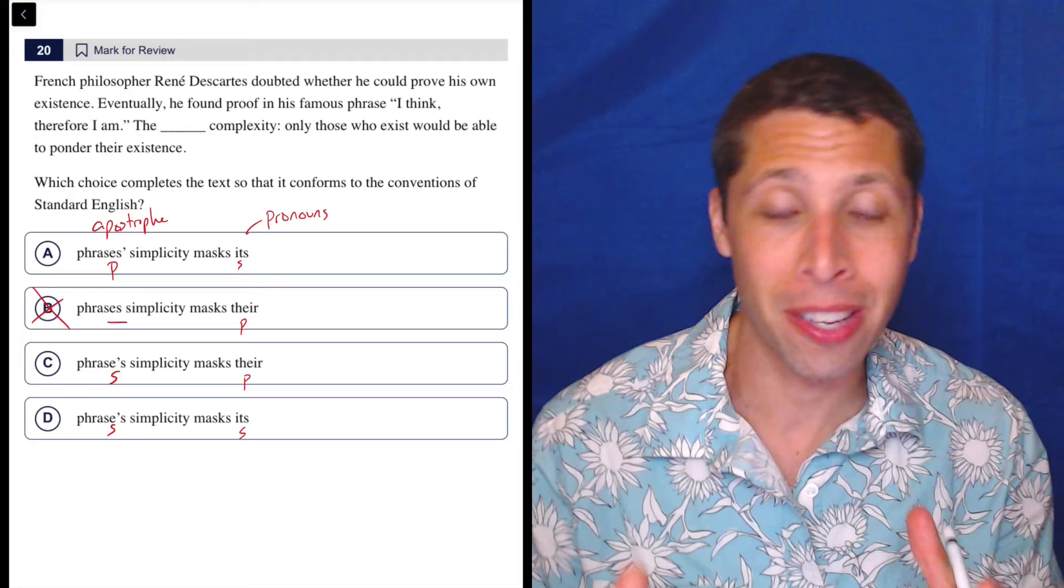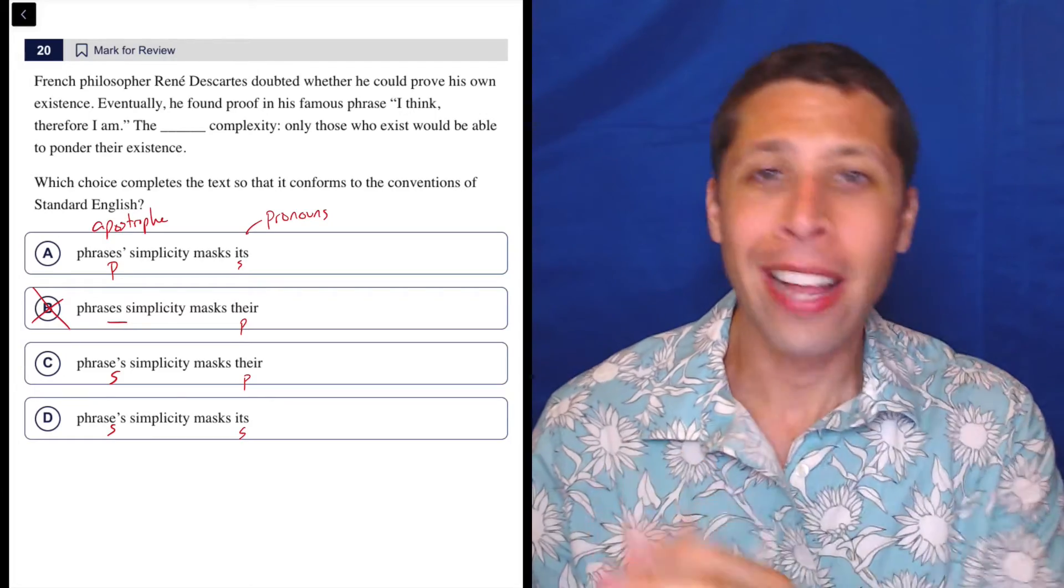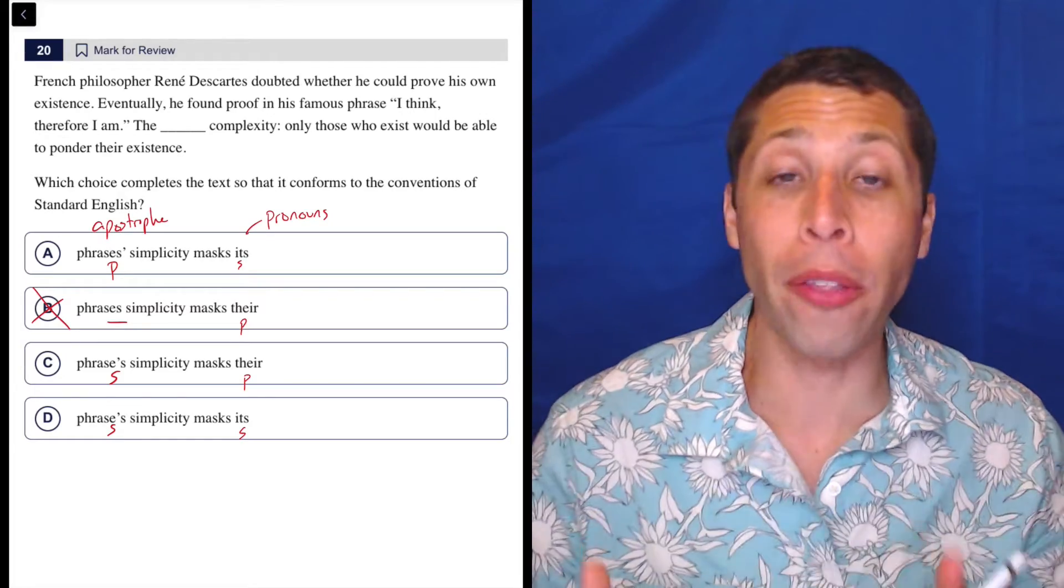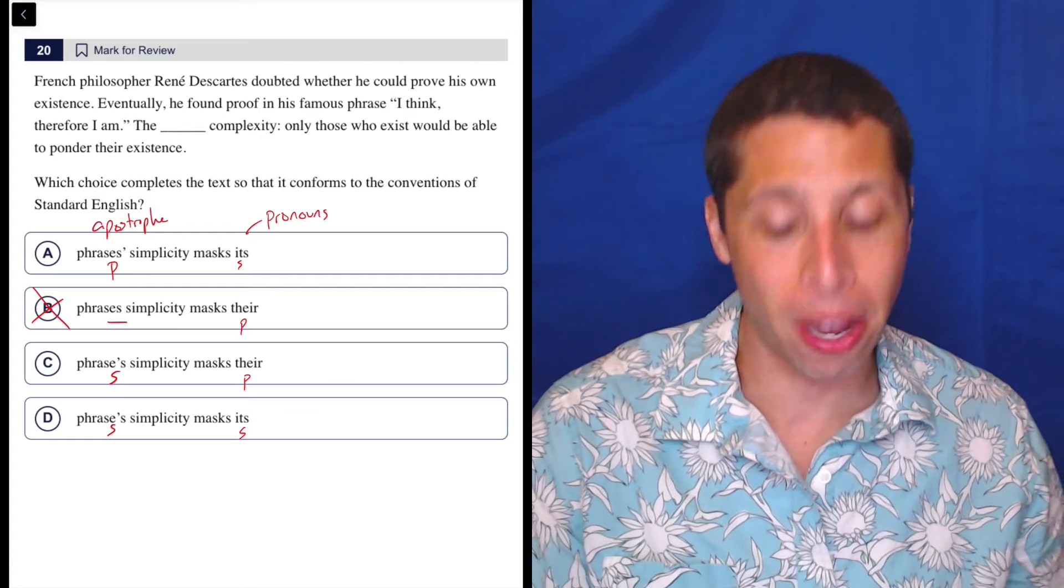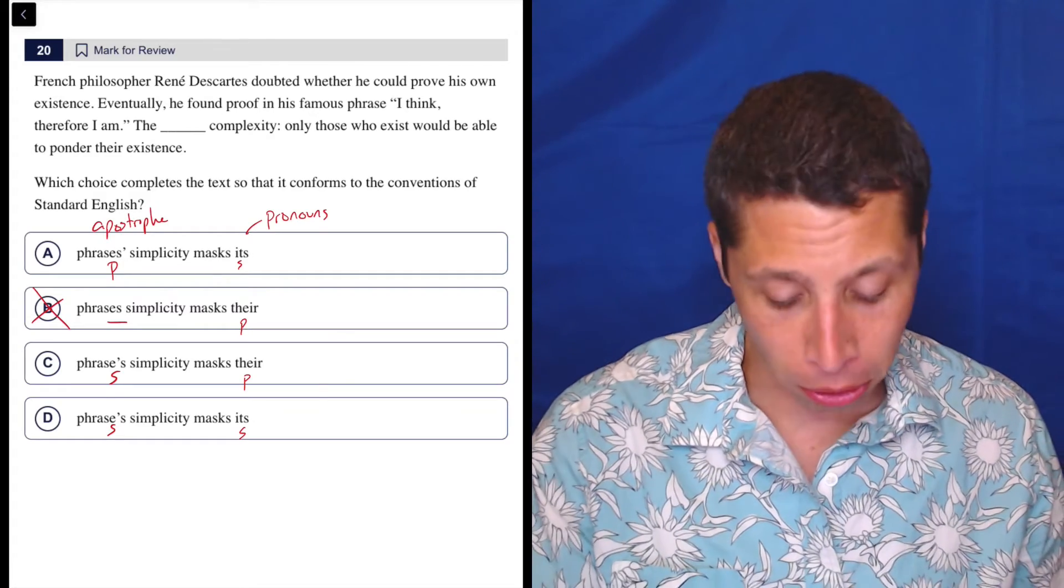There's always going to be an S with apostrophes. It's just whether it was already there and we're just putting the apostrophe, or whether we needed to add it along with the apostrophe. And that's how we can tell singulars and plurals.